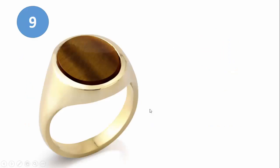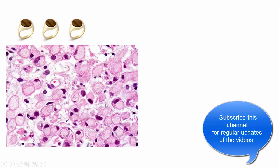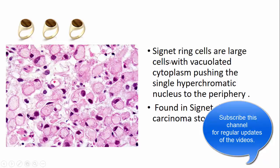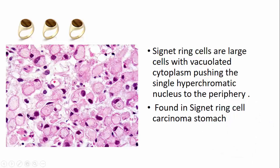The ninth one is the signet ring cell. Signet ring cells are large cells with vacuolated cytoplasm; the vacuolated cytoplasm pushes the hyperchromatic nucleus towards the periphery, resembling the signet ring appearance. This is classically seen in signet ring cell carcinoma of the stomach.